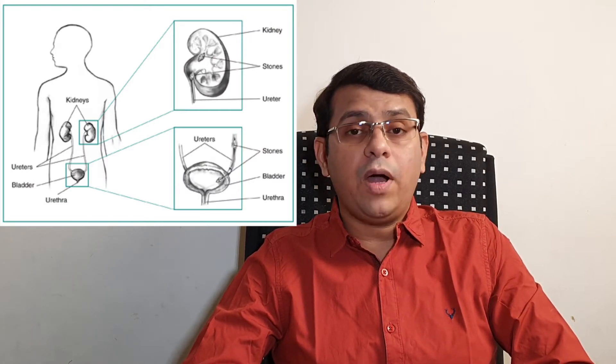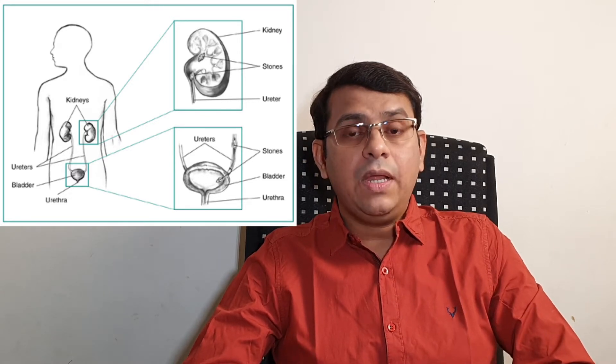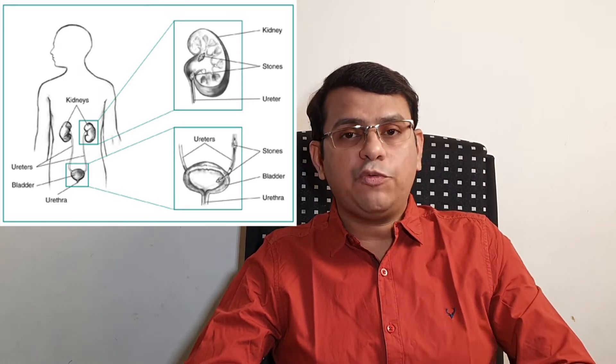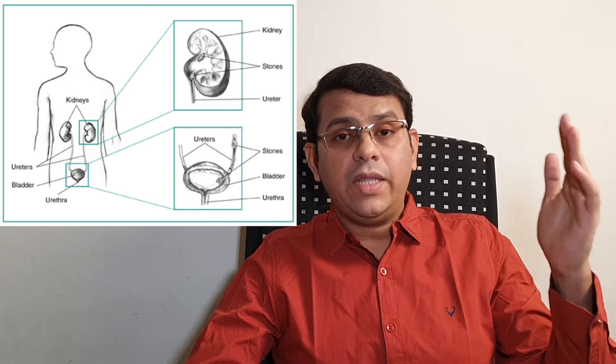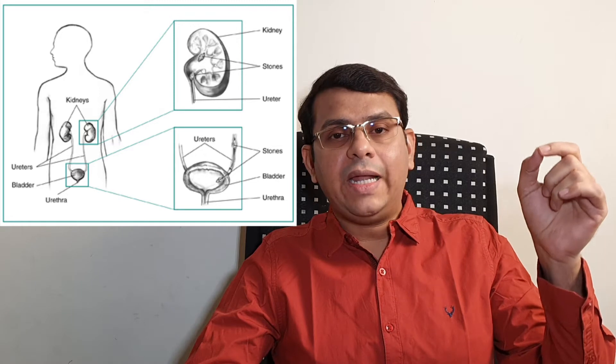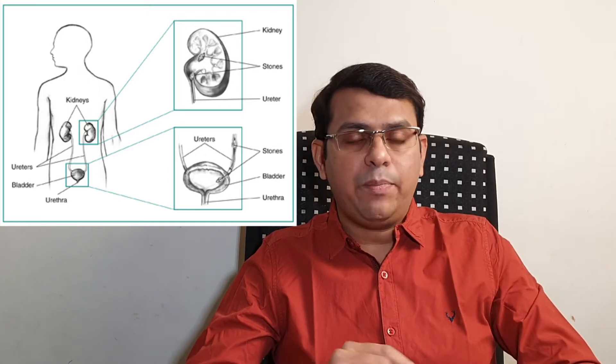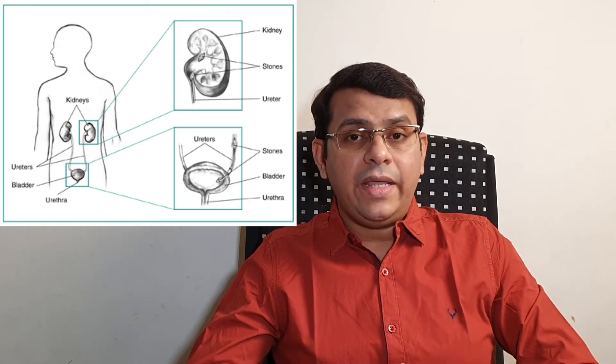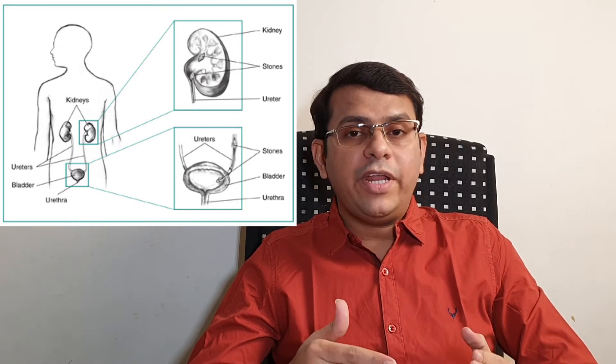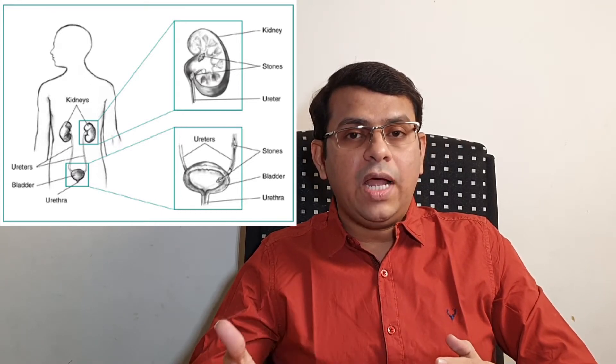Usually stones are formed in the kidney. They may travel via the ureter — the tubes connecting the kidney and the urinary bladder — and they may be present in the bladder or passed externally via the urethra. Renal stones, when they are in place in the kidney, don't usually cause symptoms. Only when they travel via the urinary tract do they produce symptoms.